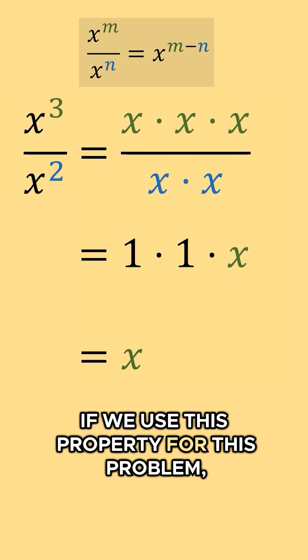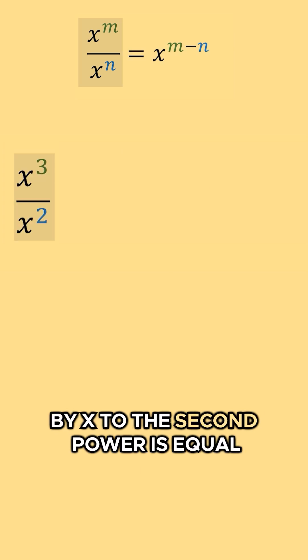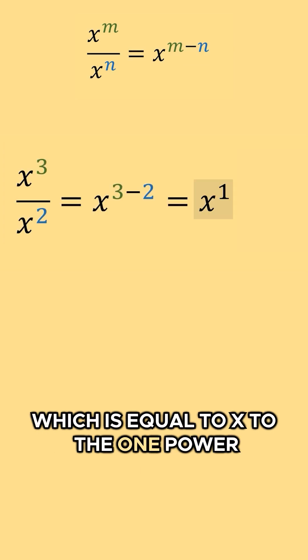if we use this property for this problem, we would have x to the third power divided by x to the second power is equal to x to the three minus two power, which is equal to x to the one power, which is just x.